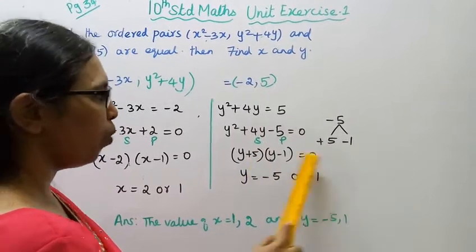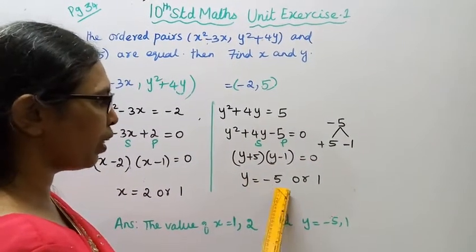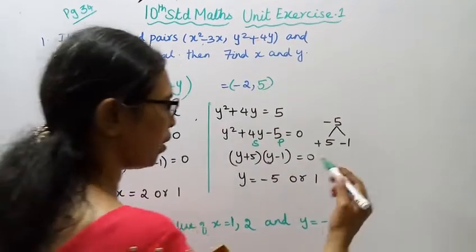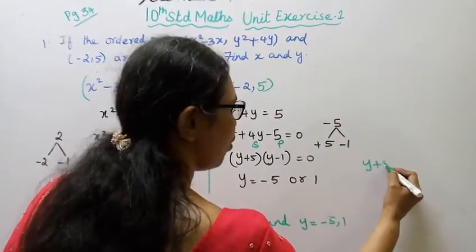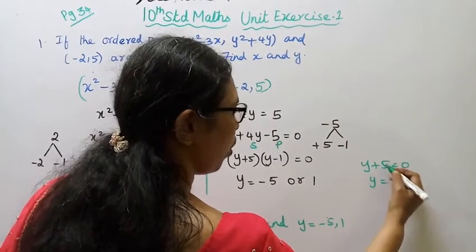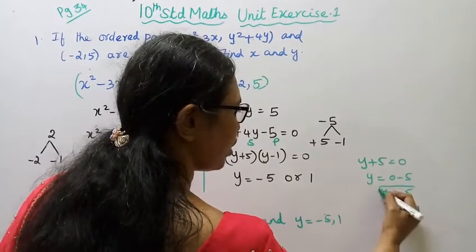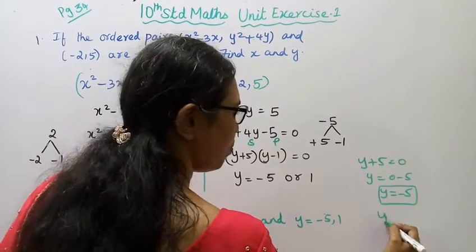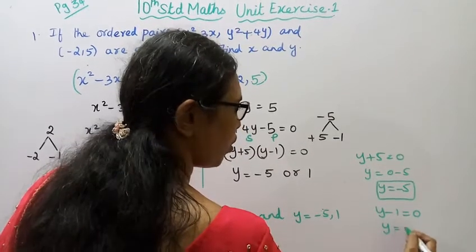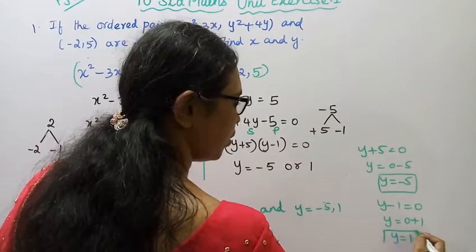The factors are (y+5)(y-1) = 0. So y+5 = 0 gives y = -5, and y-1 = 0 gives y = 1.